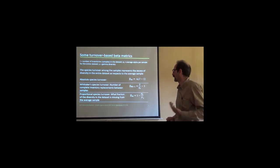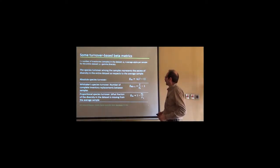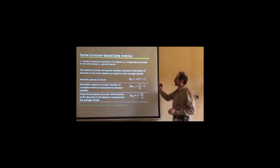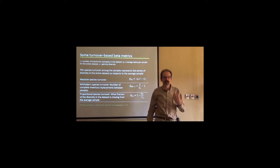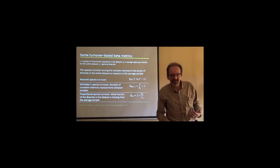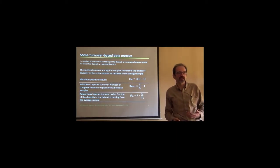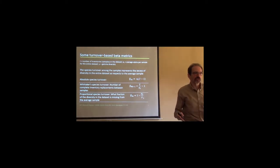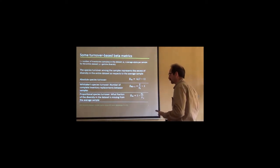How do we measure it? Well, there are several turnover-based beta metrics. If we define i as the number of samples that you have, inventories, and you define alpha t as the average alpha diversity as we saw before, and gamma as the gamma diversity, then we have the absolute species turnover, which is basically how much diversity exceeds in the entire dataset that of the average sample. In other words, what is the difference between alpha diversity and gamma diversity? Alpha diversity plus beta diversity, then gamma diversity. The difference from alpha, average alpha, to gamma. And that's the species turnover, absolute species turnover.